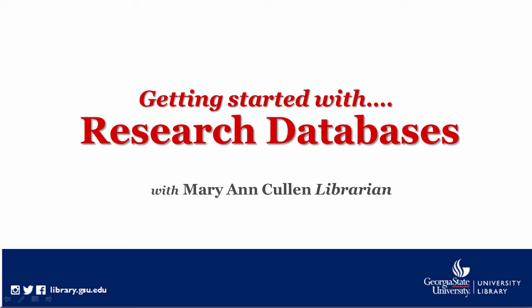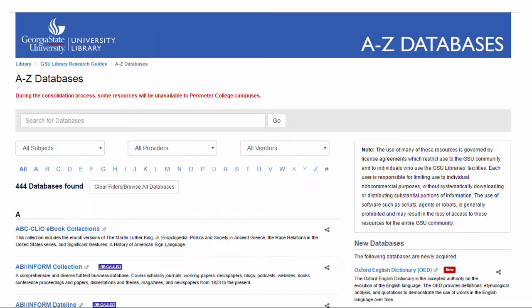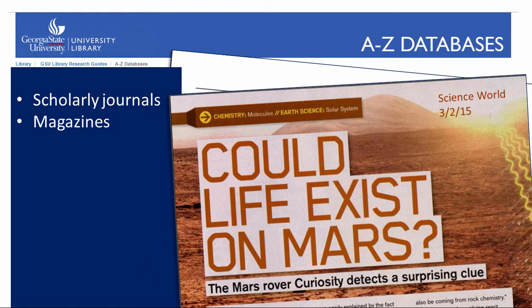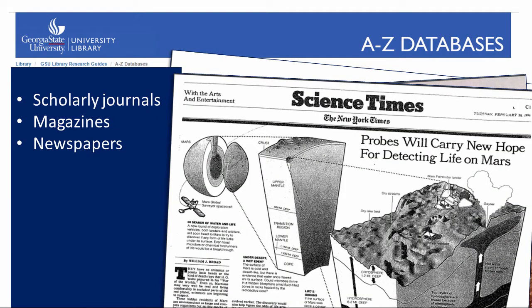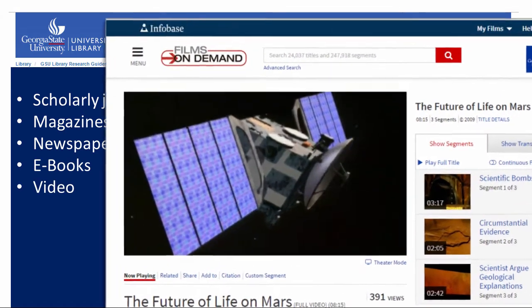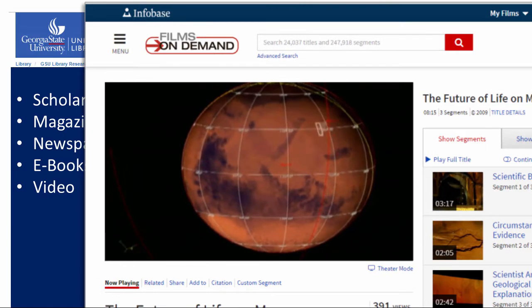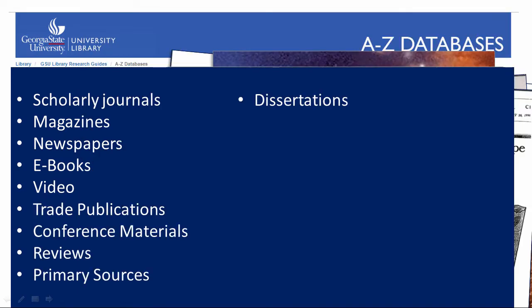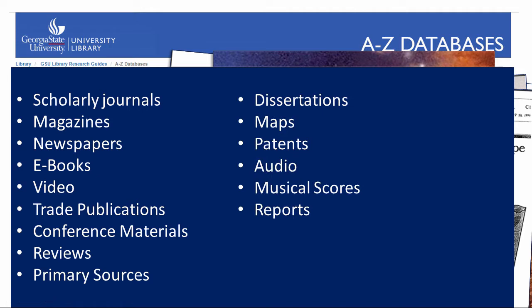Let's talk about research databases. Georgia State University Library's collection of research databases can connect you with high-quality information sources, including articles from scholarly journals, magazines, and newspapers, as well as electronic books, streaming videos, and many other types of information sources. Many of the information sources found in research databases are not available on the open web, so you cannot get to them from search engines like Google.